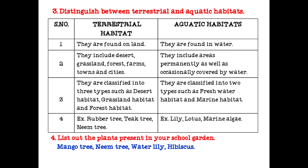Distinguish between terrestrial and aquatic habitats using a tabular column. Terrestrial habitat: found on land; includes desert, grassland, forest, farms, towns and cities. Aquatic habitat: found in water; includes areas permanently as well as occasionally covered by water.